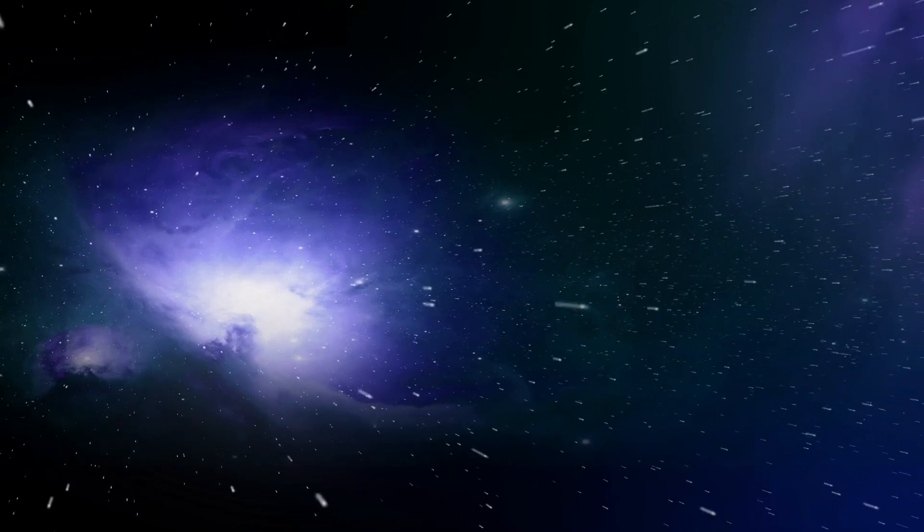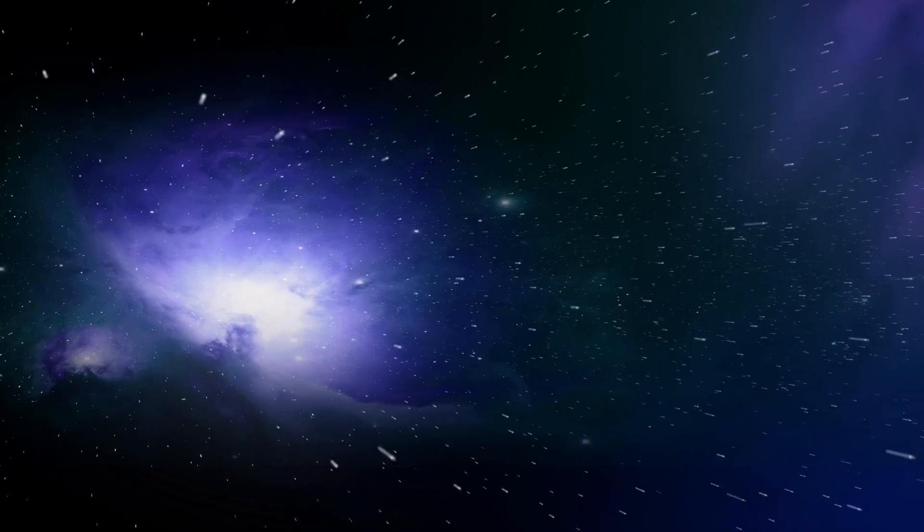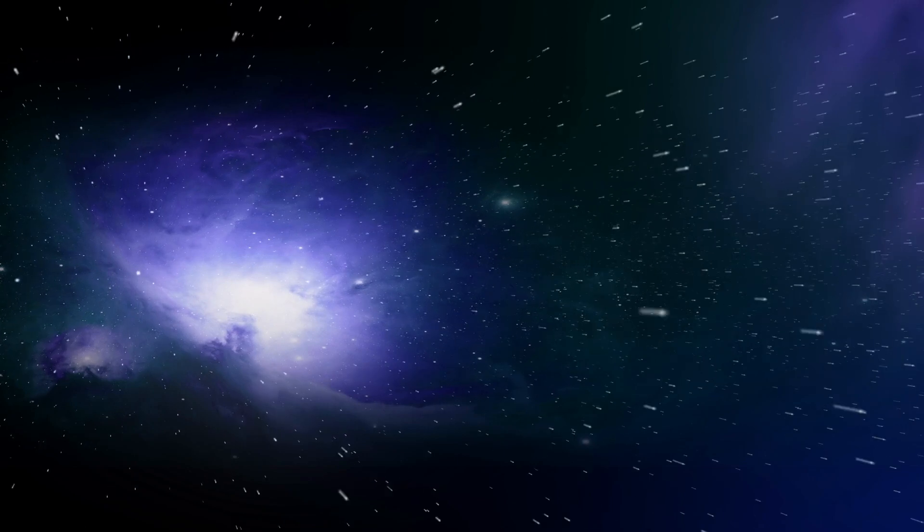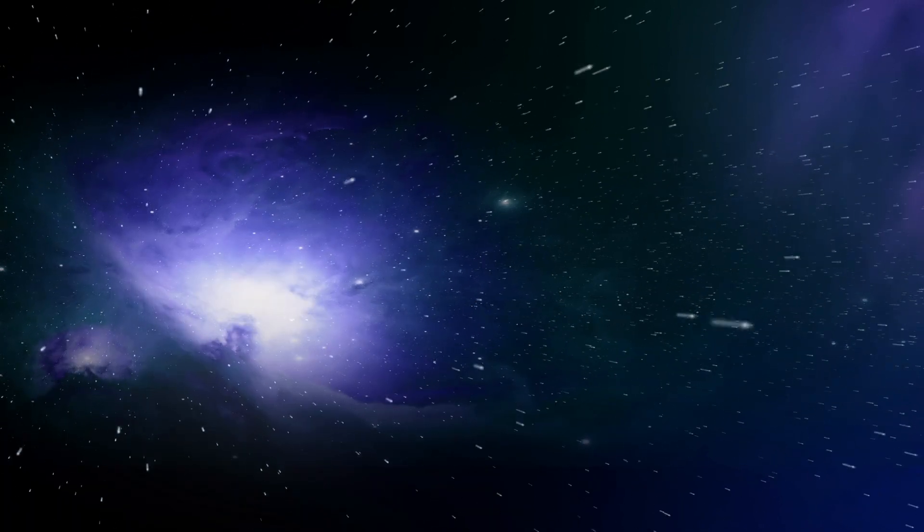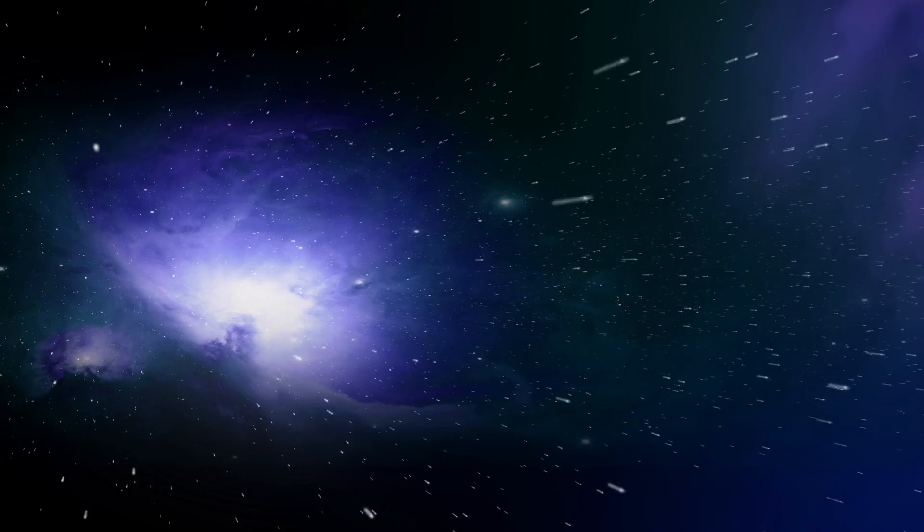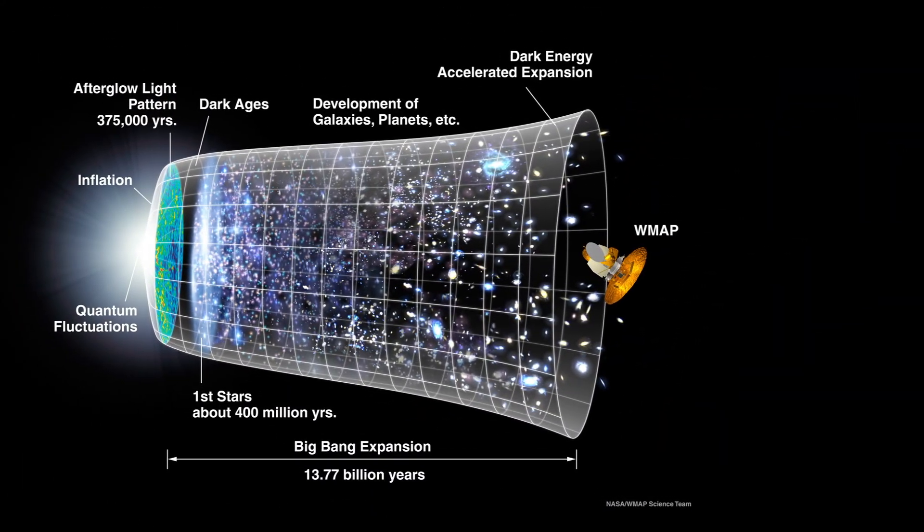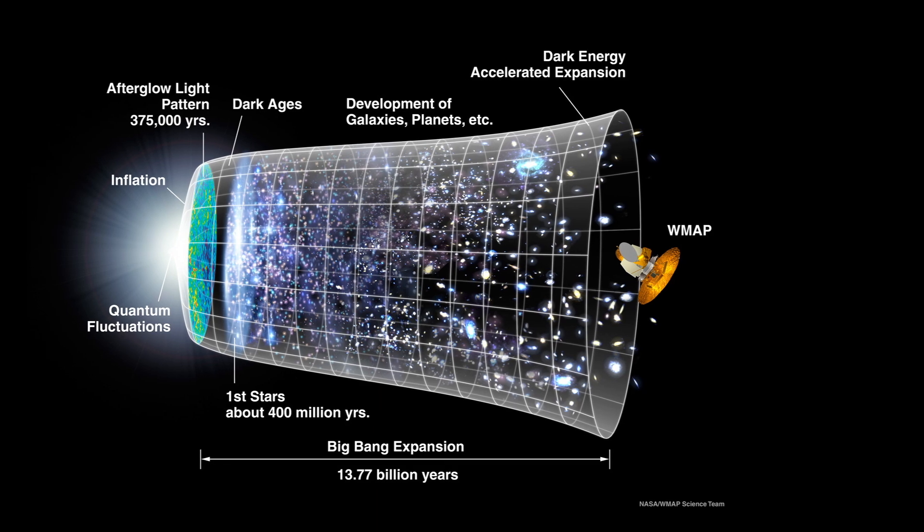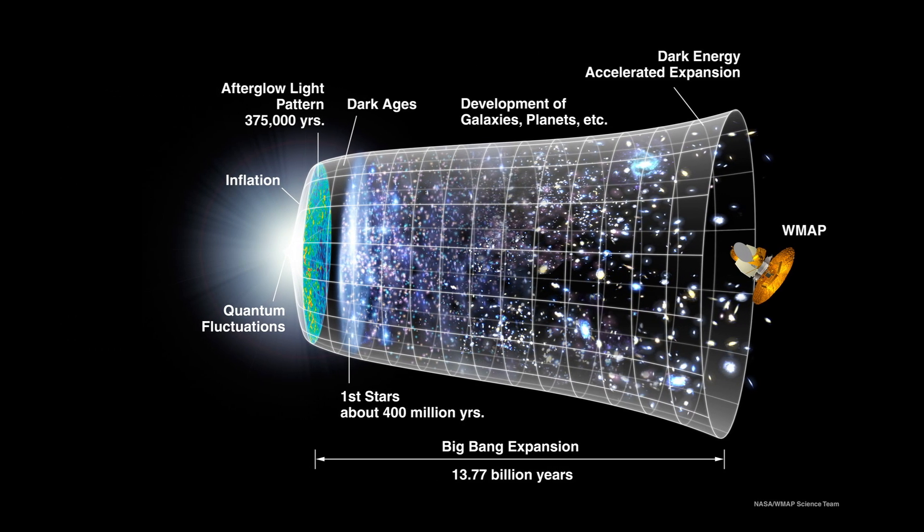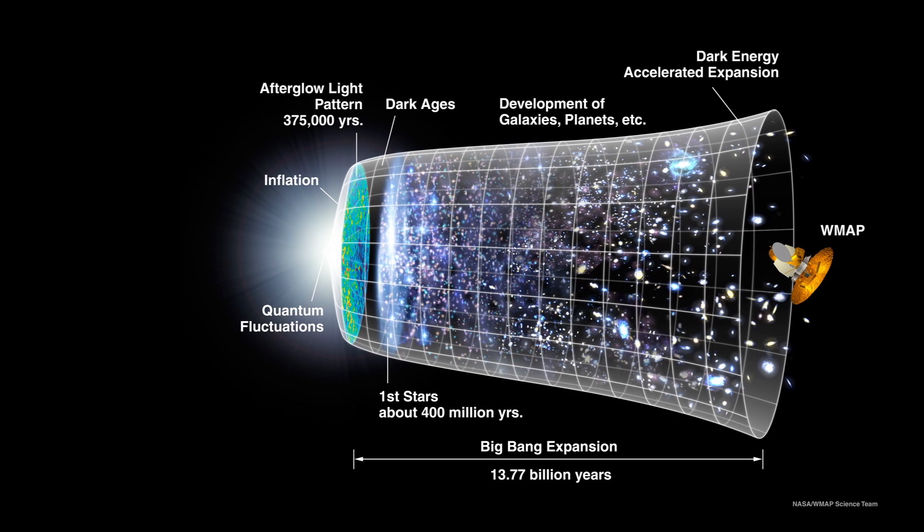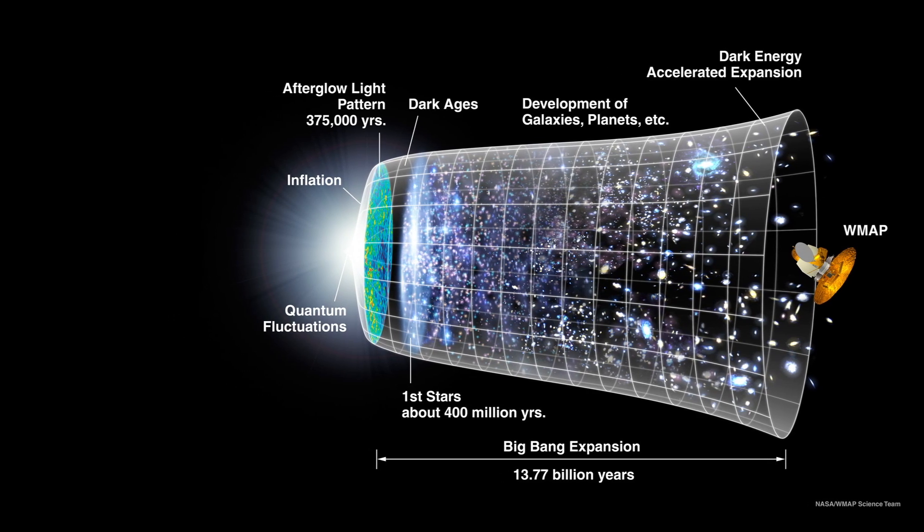It is misleading to visualize the Big Bang by comparing its size to everyday objects. When the size of the universe at Big Bang is described, it refers to the size of the observable universe and not the entire universe. To better understand the universe at its earliest state and its subsequent evolution, cosmologists have come up with the chronology of the universe which describes the history and future of the universe according to Big Bang cosmology.